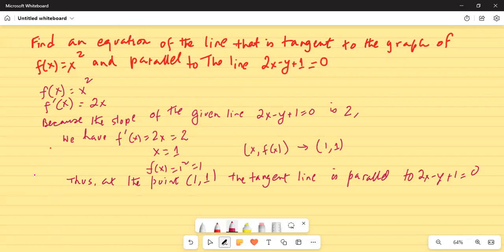So equation of the tangent line is y minus y1, which is 1 because it is passing through (1, 1), is equal to m, the slope of the tangent line is 2 as we have established before, times x minus x1 is 1. And we can further simplify it as y minus 1 is 2x minus 2.